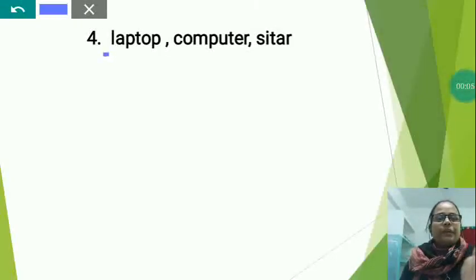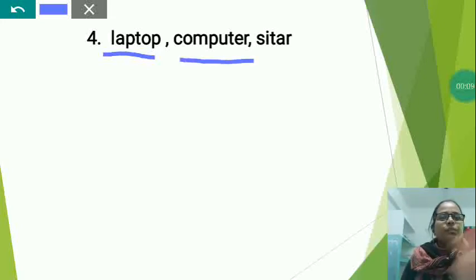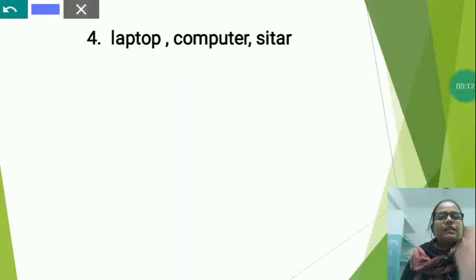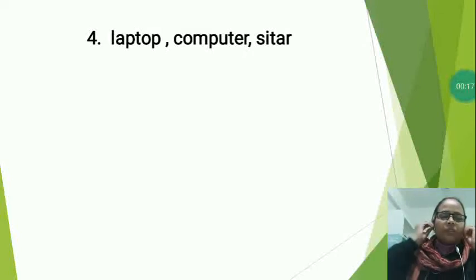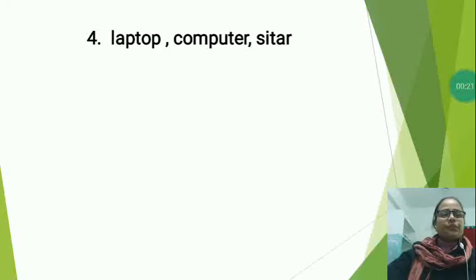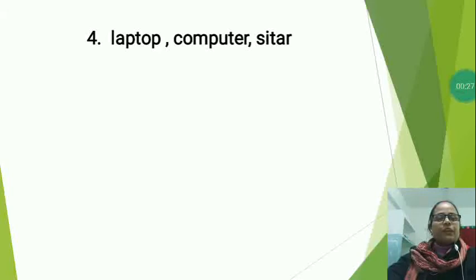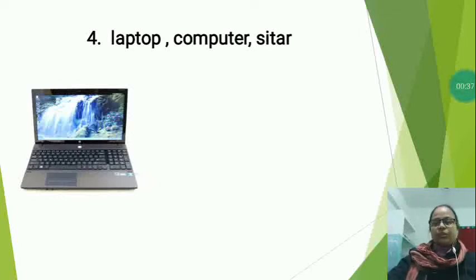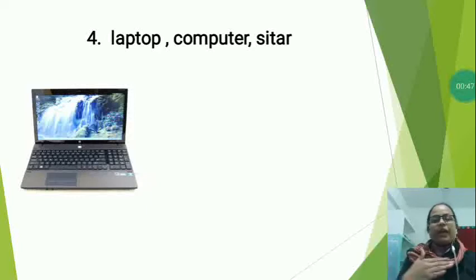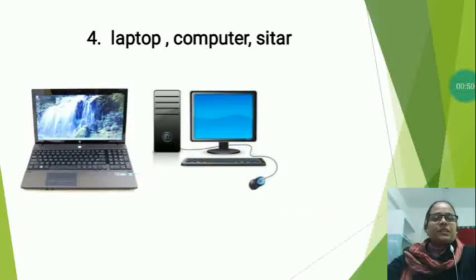The next set is Laptop, Computer, and Sitar. In this also there are three words and you will have to choose which one is the different and circle that word. The first is laptop — a small portable personal computer with a keyboard on the inside of the lid. People can carry it anywhere, whether to the office or at home. Now the next is computer.